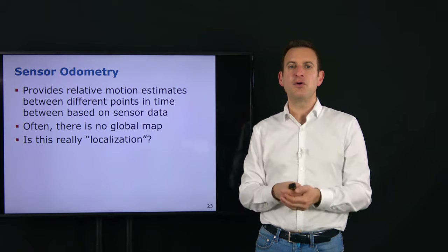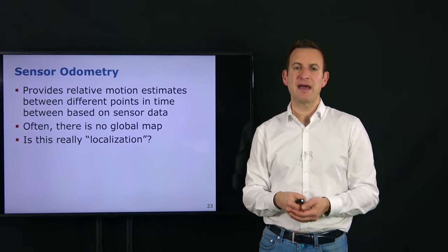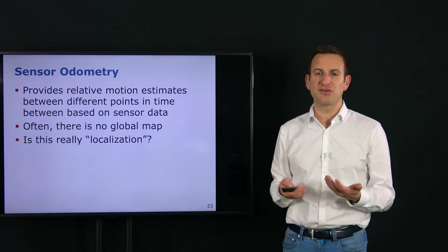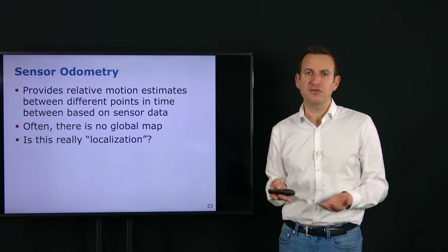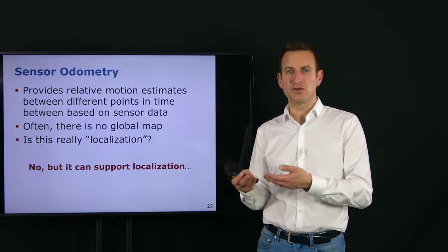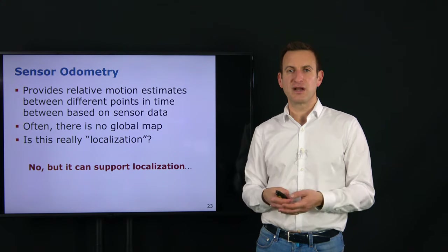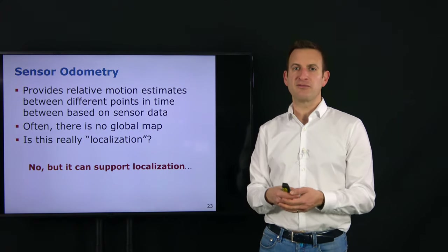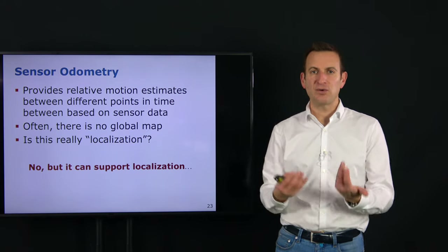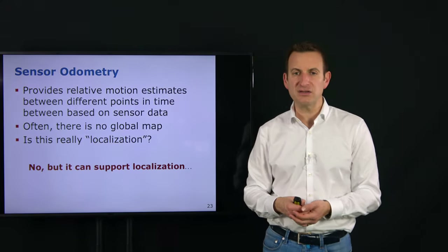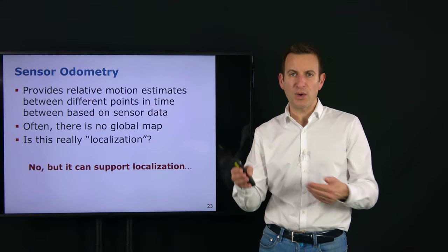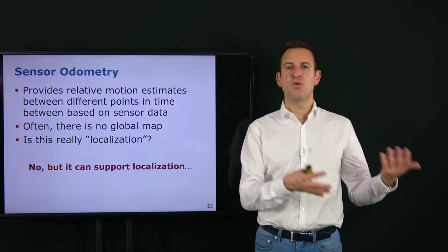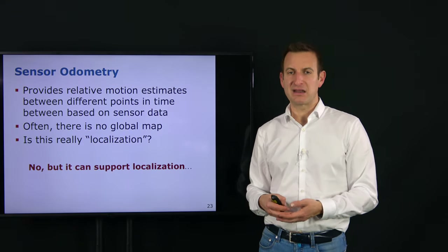This is sensor odometry: it provides relative motion estimates — updates computed from pairs of sensor observations — and typically does not use a global map. So strictly speaking, many would say it's not really localization because we don't localize with respect to a coordinate frame. However, if we know where we are and have a good estimate of relative motion, we can use this to track our pose. Sensor odometry is a tool that supports localization by reducing motion uncertainty, but it typically doesn't provide a position estimate with respect to a global frame provided by a map.